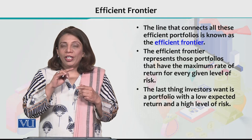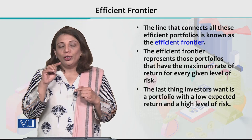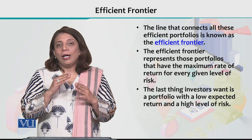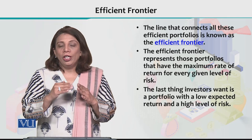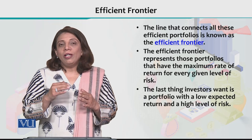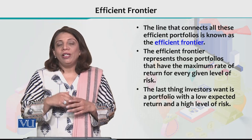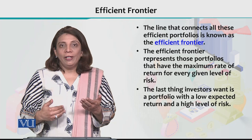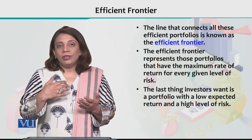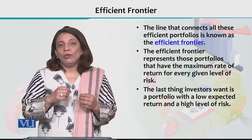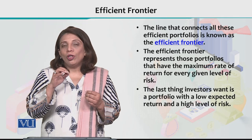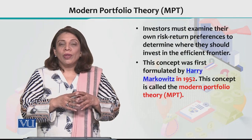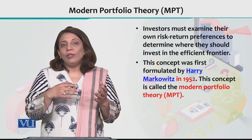All the combinations and portfolios on that frontier tell us only about those combinations where the expected rate of return is maximum. As investors, there would hardly be any investor who would invest in an opportunity where they don't get the maximum expected rate of return. So investors always go for those combinations and portfolios that fall on the efficient frontier.